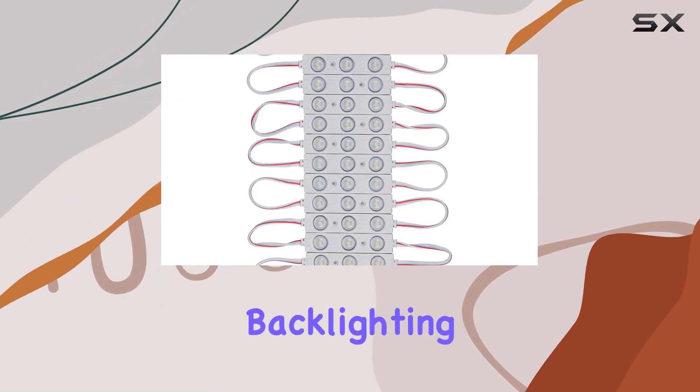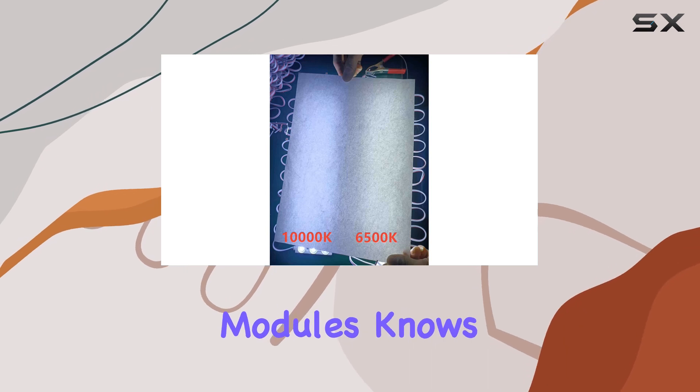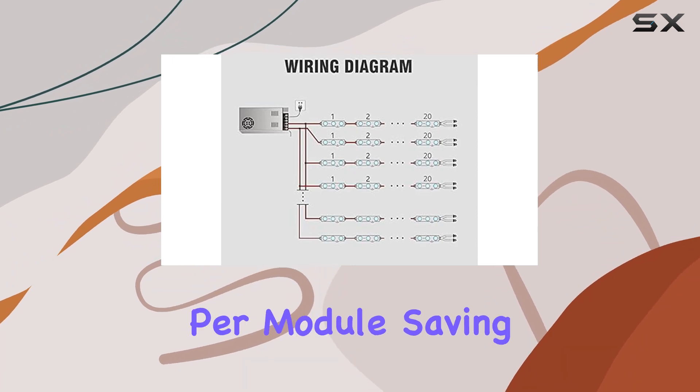From channel letters backlighting to advertisement signs and signage letters, the versatility of these LED modules knows no bounds. They're energy efficient too, consuming only 1.32W per module.